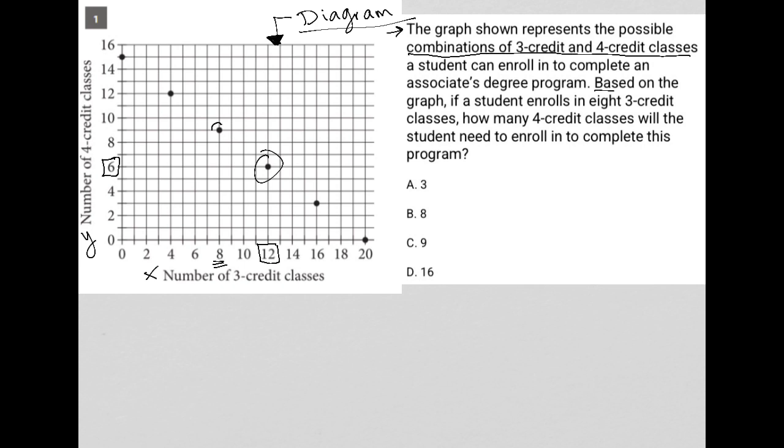That takes us to this point here, which corresponds with this point on the y-axis, which is right between eight and ten, which makes that nine four-credit classes. So my correct answer here is choice C.